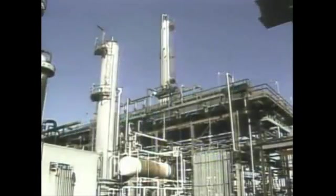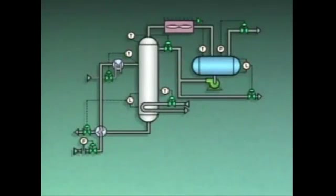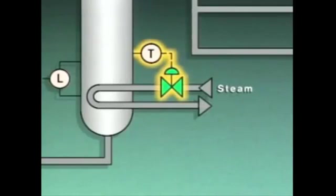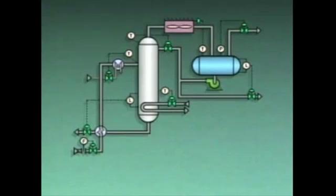A distillation tower's bottom temperature may change during the course of operation, or it may be changed to alter product composition. The system's control loops react to changes in bottom temperature to maintain the material balance and the energy balance. In this system, the bottom temperature is controlled by adjusting steam flow to a stab-in reboiler, accomplished by the bottom temperature control loop. If the bottom temperature set point is increased, the control loop responds by increasing steam flow, and as a result, more of the liquid in the bottom of the tower is converted to vapor by the reboiler.